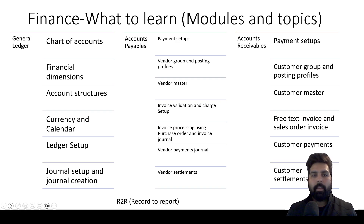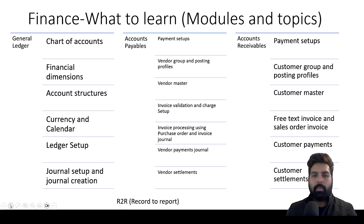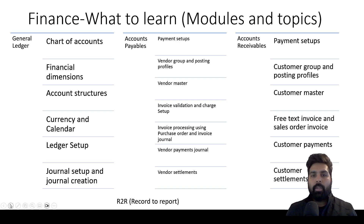Once you're done with Journal Ledger, focus on Accounts Payable — learn different payment setups, vendor group, posting profile, vendor master, invoice validation, charge setup, and invoice processing using purchase orders and invoice journals (both purchase order and non-purchase order invoices), vendor payment journals, and vendor settlement. Similarly, for Accounts Receivable, learn payment setup, customer group, posting profiles, customer master, free text invoice, customer payment, and settlements.